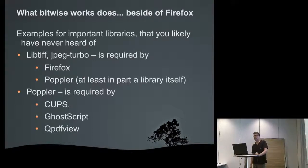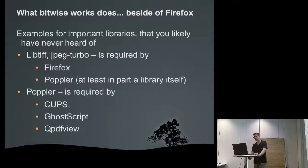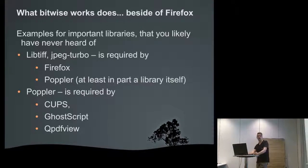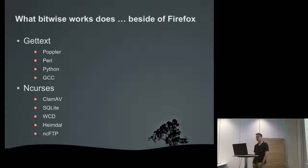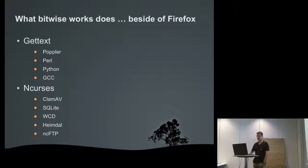The library LibTIFF JPEG-turbo is required for Poppler. Poppler is required for CUPS, Ghostscript, and QPDF Viewer. So you see one needs the other — and if you fix one, it's fixed for all, because it's all DLL-based and not statically linked. That's also an advantage. GetText is another one used a lot — it's used in Poppler, Perl, Python, and GCC. Curses is also a text-based library used in Heimdall, NCFTP, and ASPELL. So always if you fix something in a library, the others benefit as well.